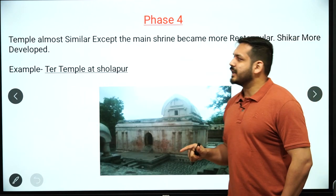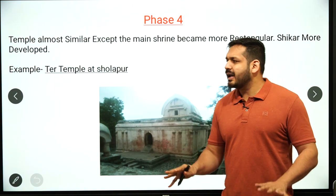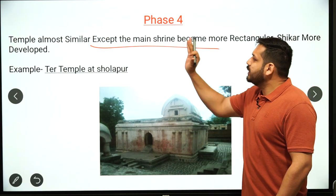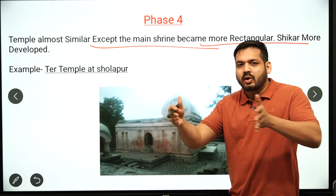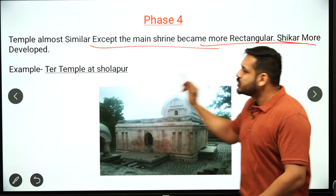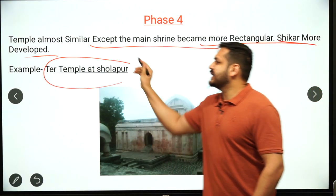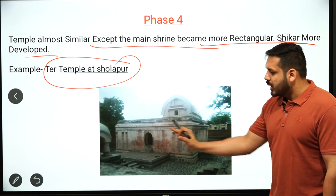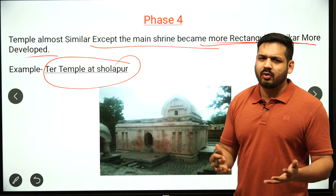In Phase 4, the temple is almost similar to Phase 3 except the main shrine becomes more rectangular. The Shikhar is also more developed compared to Phase 3. An example of Phase 4 is the temple at Sholapur in Maharashtra. The curve-shaped Shikhar continues, but the main shrine's rectangular form is more pronounced.